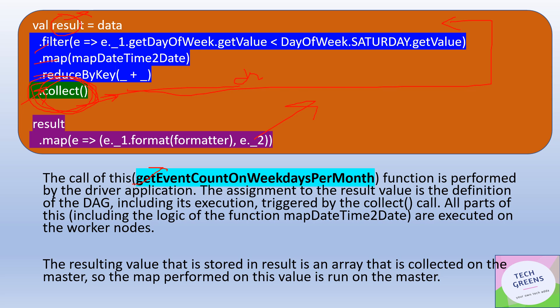Now the result dataset is available on the driver node. You have called another transformation `map` on this result dataset. Since the result dataset has already been collected at the driver node, this particular transformation will happen on the driver node. This is the twist in the question — though it is a transformation and not an action, because `collect` was already called, the result is on the driver and the `map` is applied on the driver node itself.